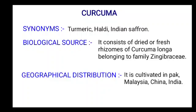Parts used: dried as well as fresh rhizomes. Species: Curcuma longa. Family: Zingiberaceae. Geographical distribution: it is cultivated in Pakistan, Malaysia, China and India.